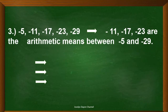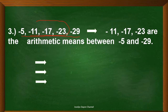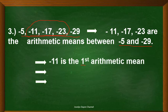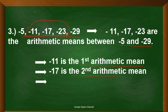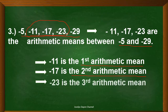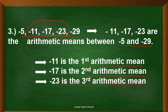Third example: negative 5, negative 11, negative 17, negative 23, negative 29. Negative 11, negative 17, and negative 23 are the arithmetic means between negative 5 and negative 29. Negative 11 is called the first arithmetic mean, negative 17 is the second arithmetic mean, and negative 23 is the third arithmetic mean.